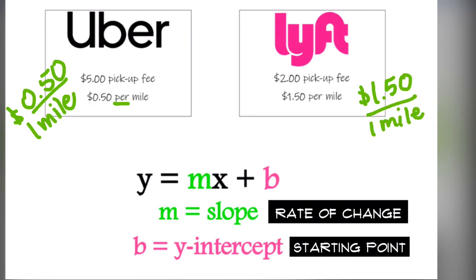Now let's talk about the starting point. The minute I order my Uber or Lyft, they charge me an amount. Uber charges $5 and Lyft charges $2, both charged before I ever actually travel any miles. Now that we know the rate and the starting point, we can write the equations.